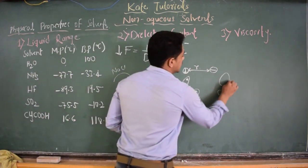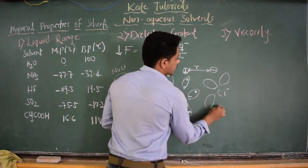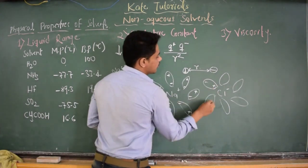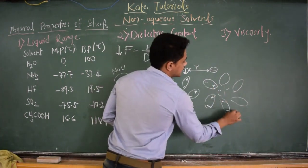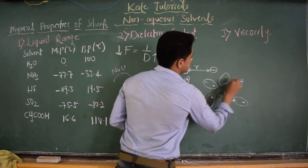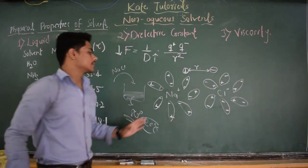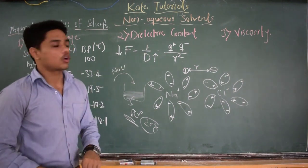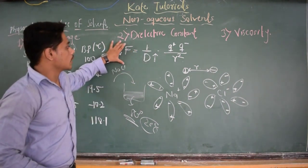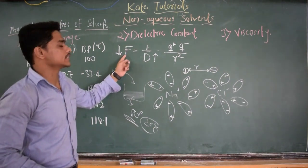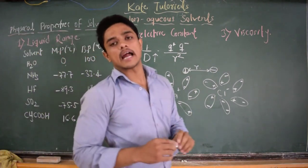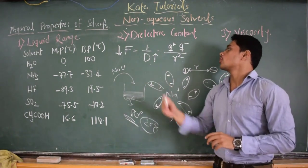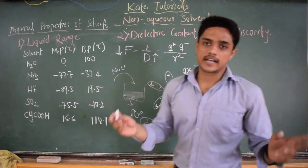The hydration enthalpy will be negative because it is exothermic — there is a release of energy. And the water molecules go on separating the Na+ and Cl− ions of the solute. This is about dielectric constant, and this is Coulomb's law of attraction. The force of attraction between cation and anion is represented by F, and D represents the dielectric constant. As dielectric constant increases, the force of attraction decreases.